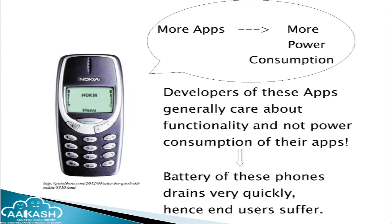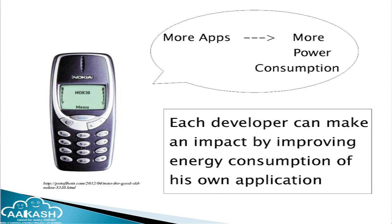Many developers across the world are creating Android applications and uploading them to the Android market so that many users can use them, but they generally care about the functionality of the applications and not about power consumption. Hence, the battery of phones drains very quickly and the end users suffer. So if developers give as much importance to power consumption as to functionality, this can be improved.